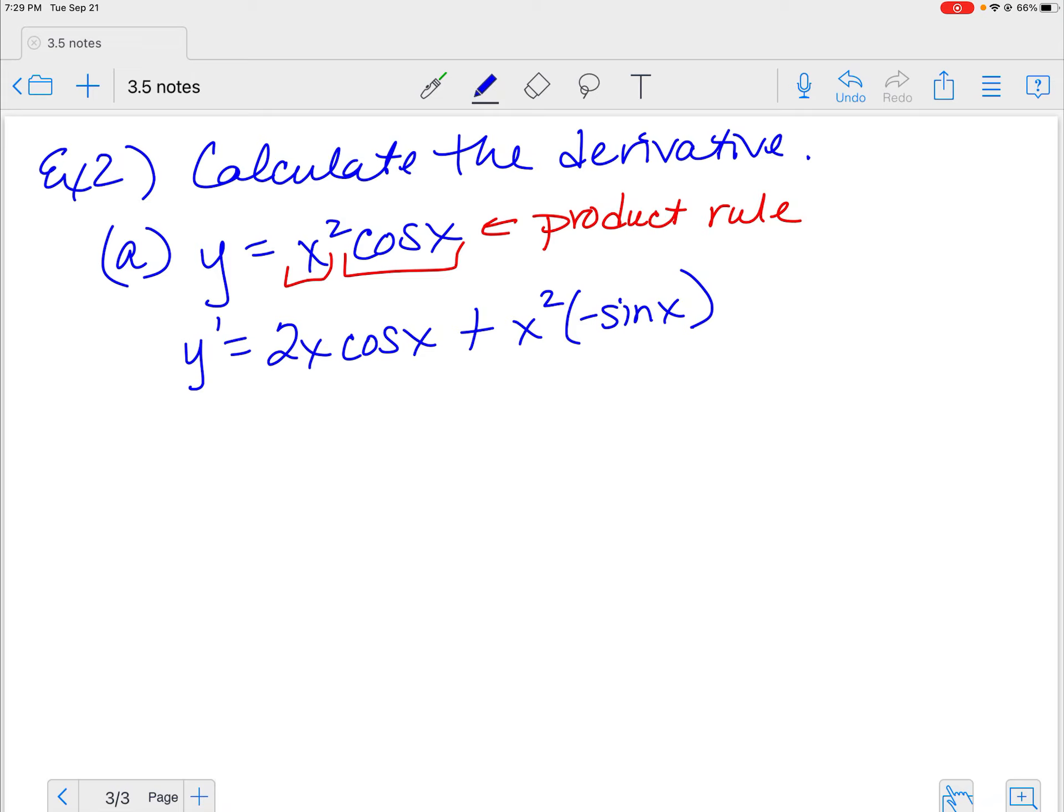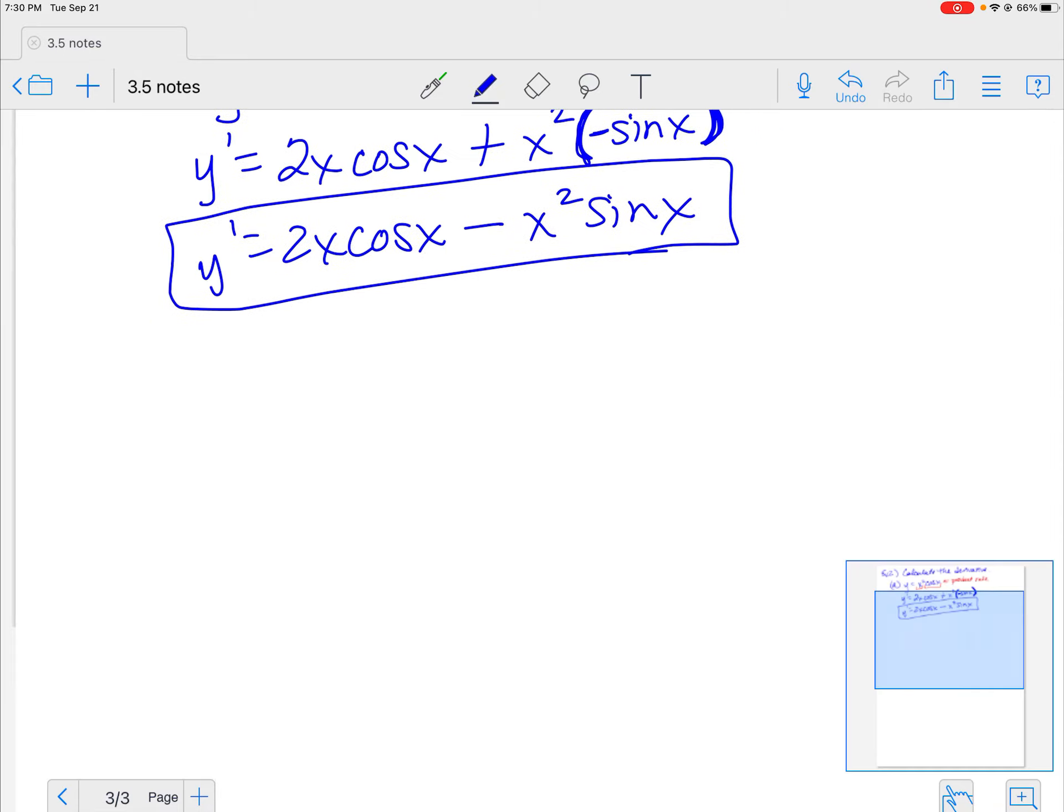Put parentheses around this sine of x to show that it is multiplied. You don't want this to look like a minus sign. Now clean it up. Y prime is equal to 2x cosine x minus x squared sine of x. And that's it. Not bad, right? It's no big deal. Let's do another one.